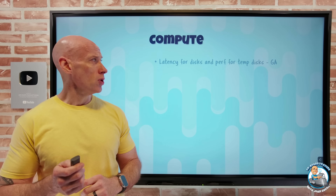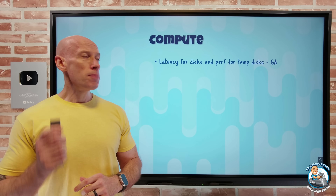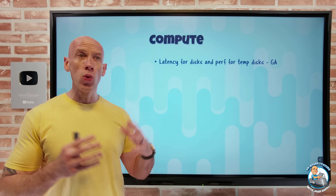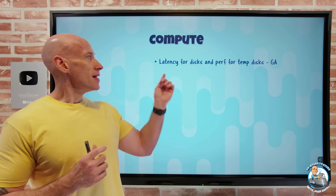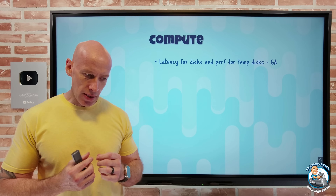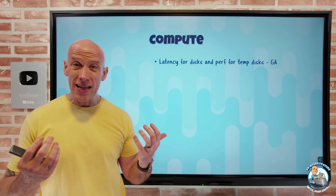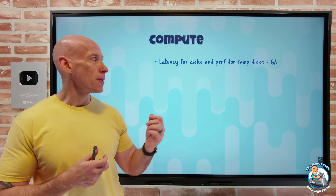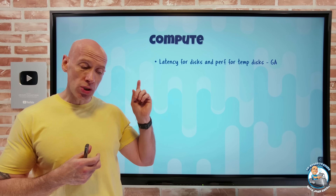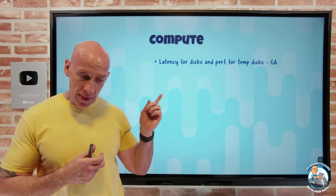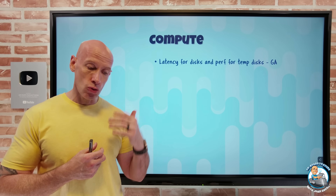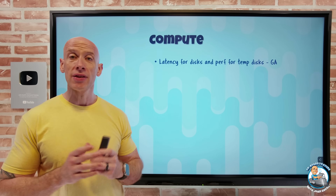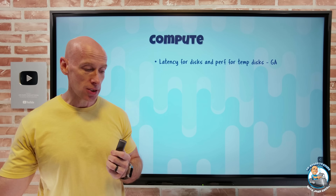On to what's new. On the compute side, there are some new metrics available. For all of the disks, there's now a latency metric monitoring average latency for IOs in milliseconds. And now for temp disks, you also get the IOPS, throughput, and queue depth attached to your Azure virtual machines.